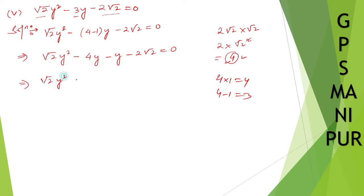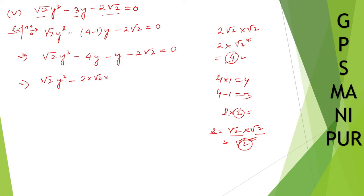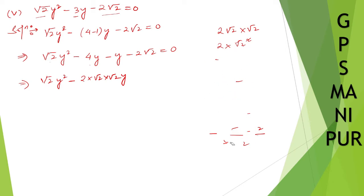Let me write down root 2 y squared minus 4y. I can write 4 as 2 into 2. And these two, I can write 2 as root 2 into root 2 — root 2 into root 2 is root 2 squared. Square and root cancel, so I can write root 2 into root 2 as 2. So I can write down 2 into root 2 into root 2 y. I am writing like this to make it easy for you to understand.